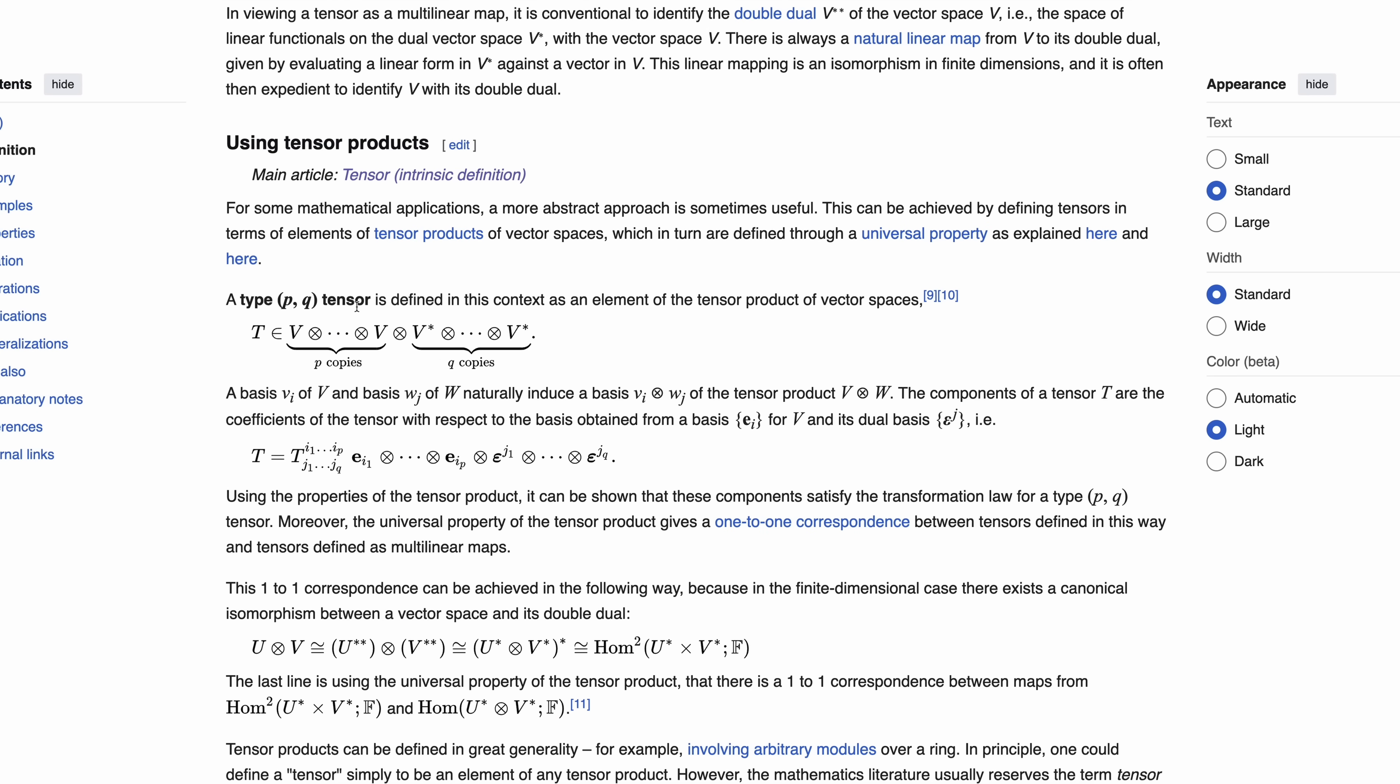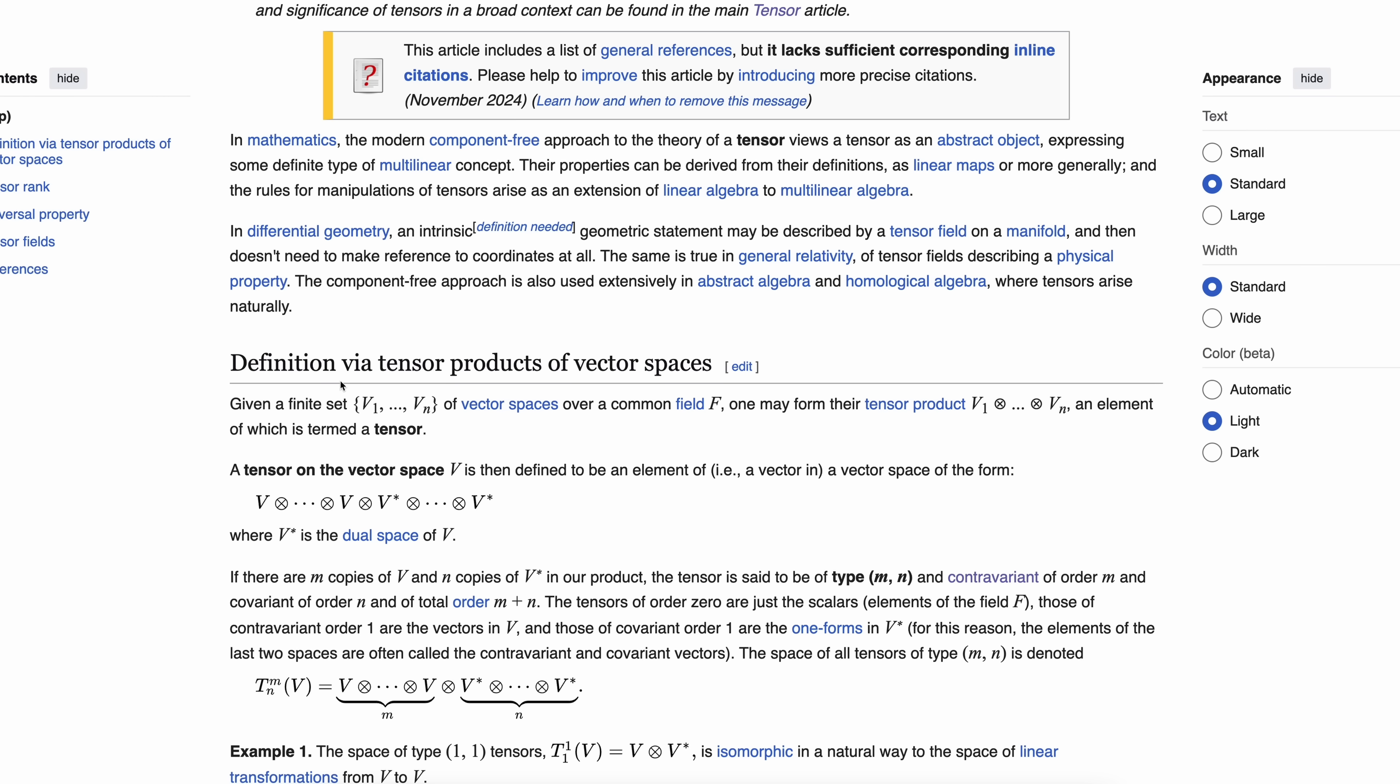A type P Q tensor is defined in the context of an element of the tensor product of vector spaces. Something else. A definition via tensor products of vector spaces. Given a finite set of vector spaces over a common field F, one might form their tensor product V1 up to Vn, an element of which is termed tensor. I hate you mathematicians.